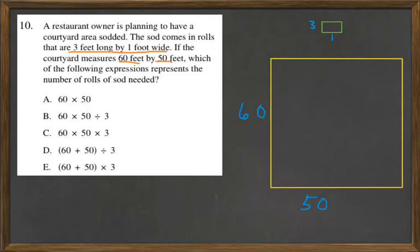Well, again, we're going to be using length times width here to figure out area. And the area of the sod is just going to be 3 times 1, which is 3 foot squared.